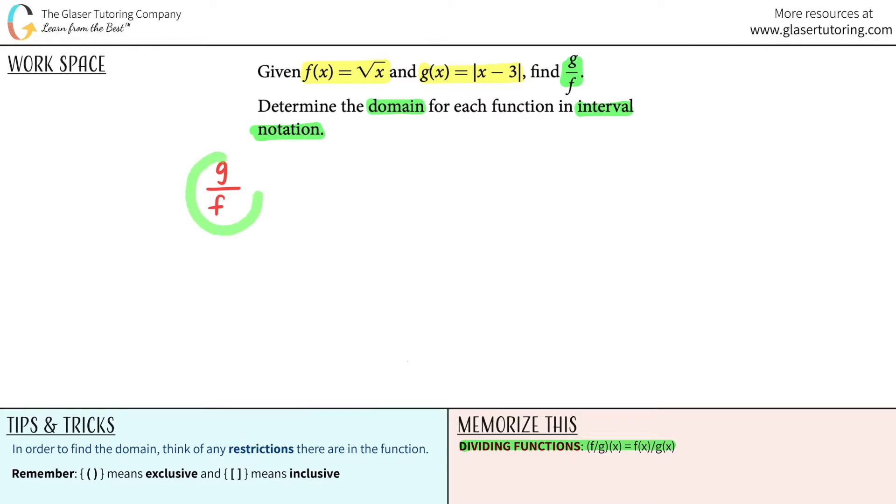Now in this case it's the reverse. So what they mean is that they want to divide these functions. So it's the same thing as saying g of x divided by f of x. Now all we got to do is just plug in what our g of x function was and our f of x function.